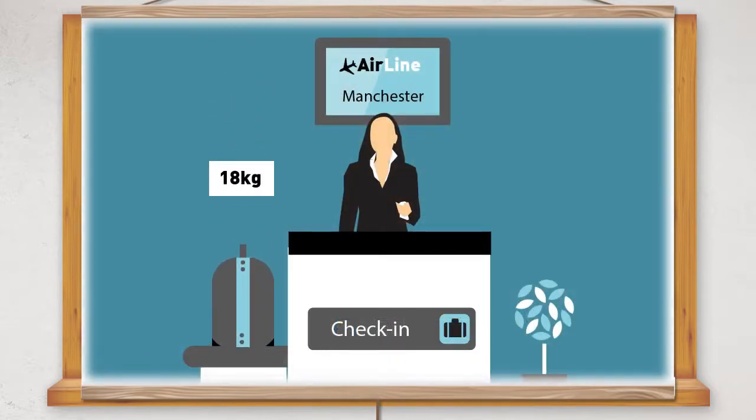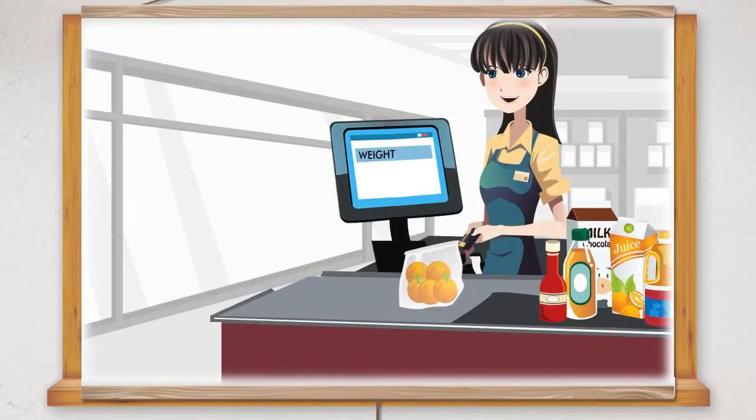Airports use scales to weigh people's luggage before boarding a plane. Supermarkets use scales to measure the weight of food, such as meat, veg and fruit.